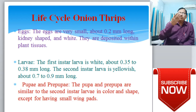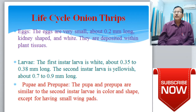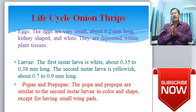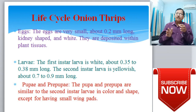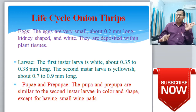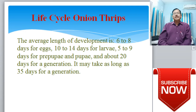The life cycle of onion thrips has four stages. Eggs are very small — about 0.2 mm long, kidney-shaped and white — deposited within plant tissues. The first instar larva is white, about 0.35 to 0.38 mm long. The second instar larva is yellowish, about 0.7 to 0.9 mm long. After larval development, they become pupae and pre-pupae, which are similar to second instar larvae in color and shape but have small wing pads.